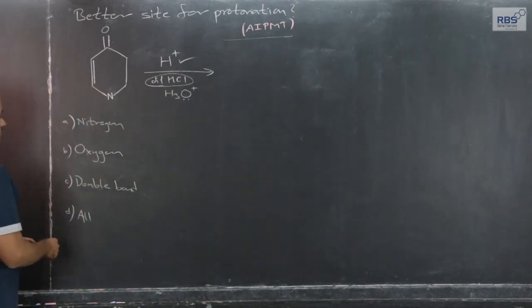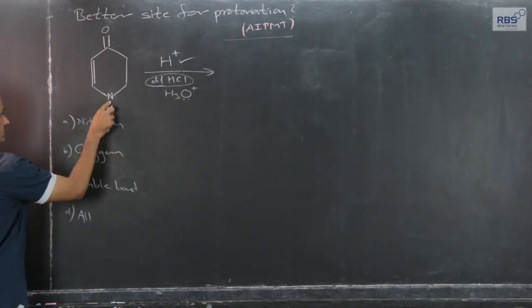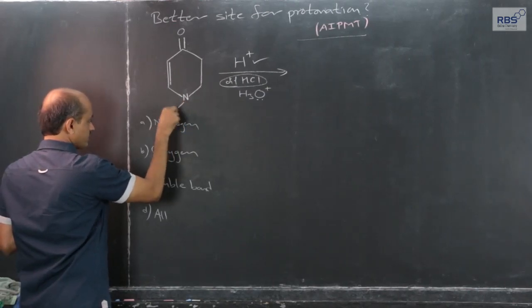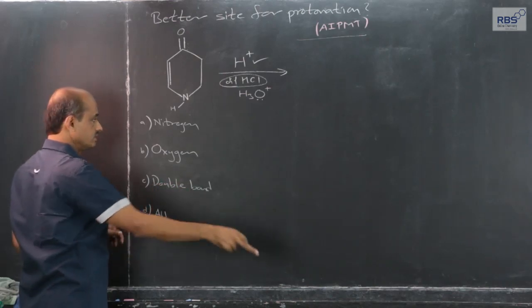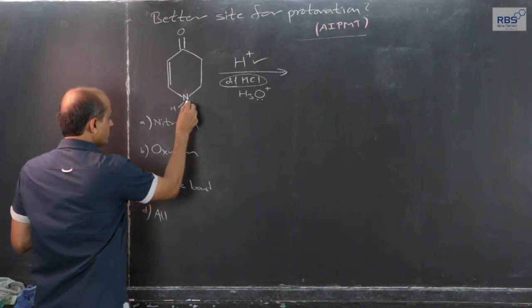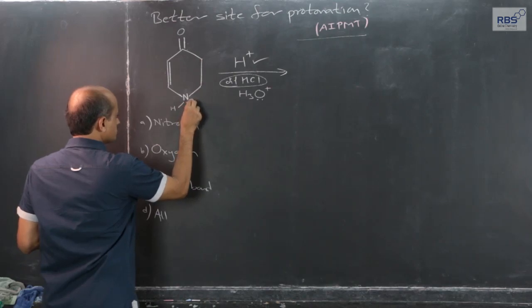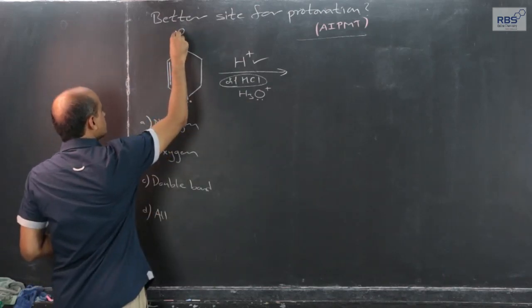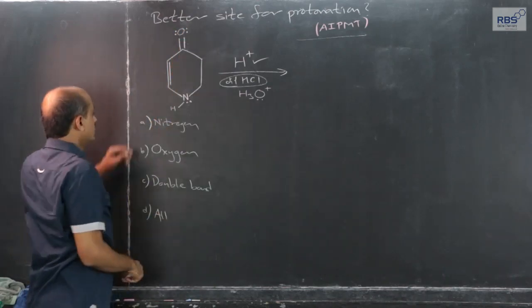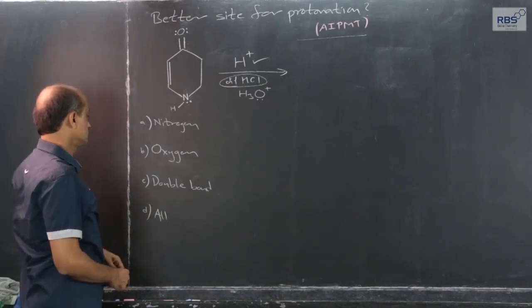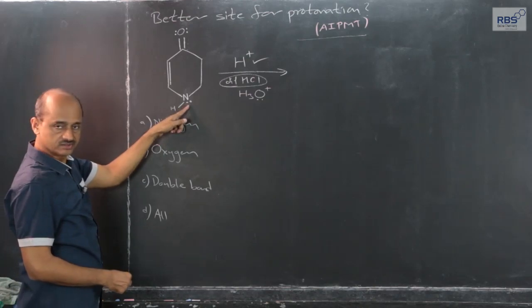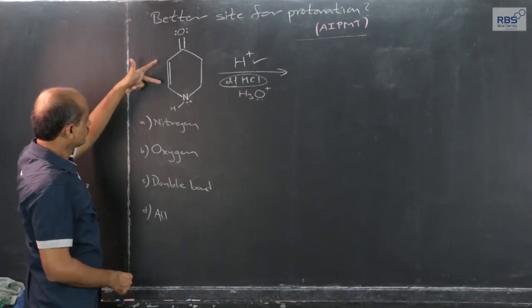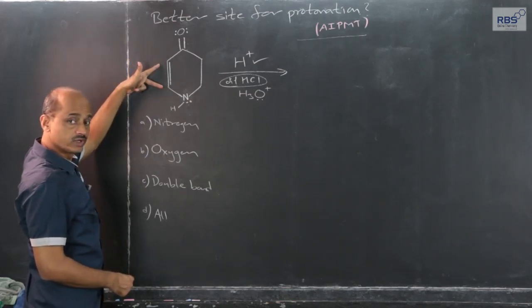H+ ion, as per the options: nitrogen here, one hydrogen is present not shown in the question from the paper actually, and one lone pair is present on nitrogen. One lone pair is present on nitrogen, two lone pairs are present on oxygen, and here is one carbon-carbon double bond. Protonation is possible here, protonation is possible here also. Protonation of carbon-carbon double bond also we have considered, so that way it is possible here also. And all cannot be the answer because among the various possible, which one is better?